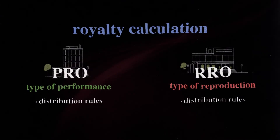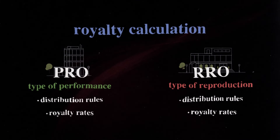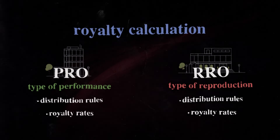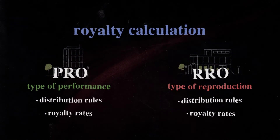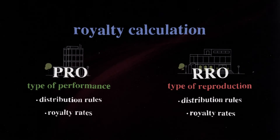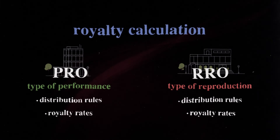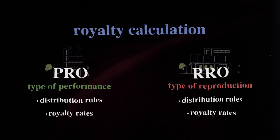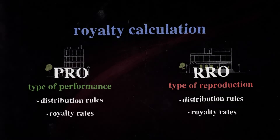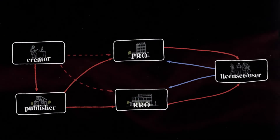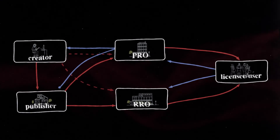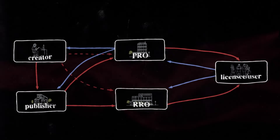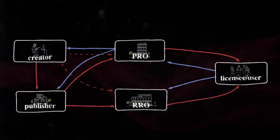Based on their respective distribution rules and the royalty rates in place when the musical work was used, the PRO calculates the performance royalty and the RRO calculates the mechanical royalty generated, depending on how the licensee has performed and reproduced the work. The PRO pays the performance royalty to the music creator and publisher, if applicable, based on the division of shares identified when the song was registered.